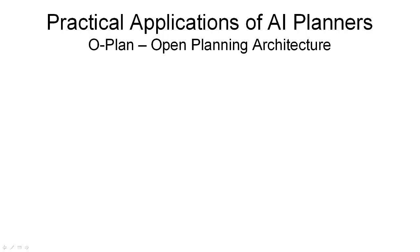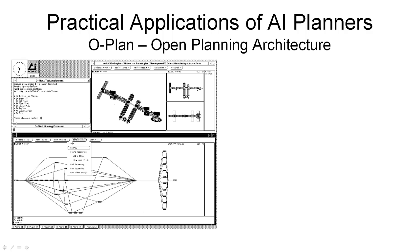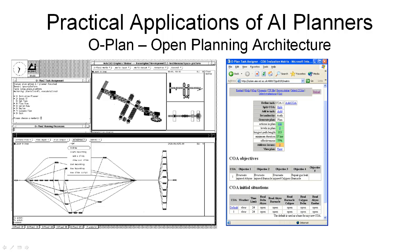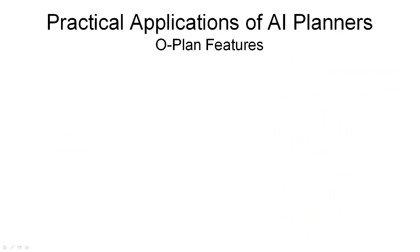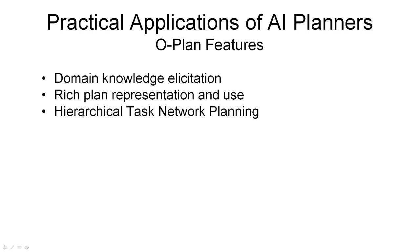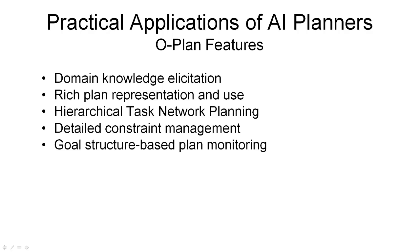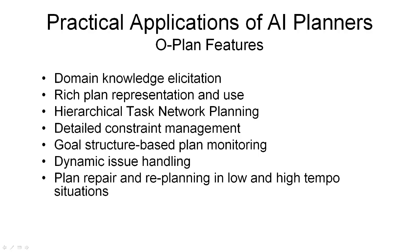O-Plan was built by my own team at the University of Edinburgh through the 1980s and the 1990s. It was based on the features in the earlier non-LIN hierarchical task network planner. O-Plan supported the whole life cycle of planning, from domain modeling and knowledge elicitation tools, through planning, detailed constraint management, and plan execution. It was able to repair plans or re-plan as necessary when execution failures occurred.